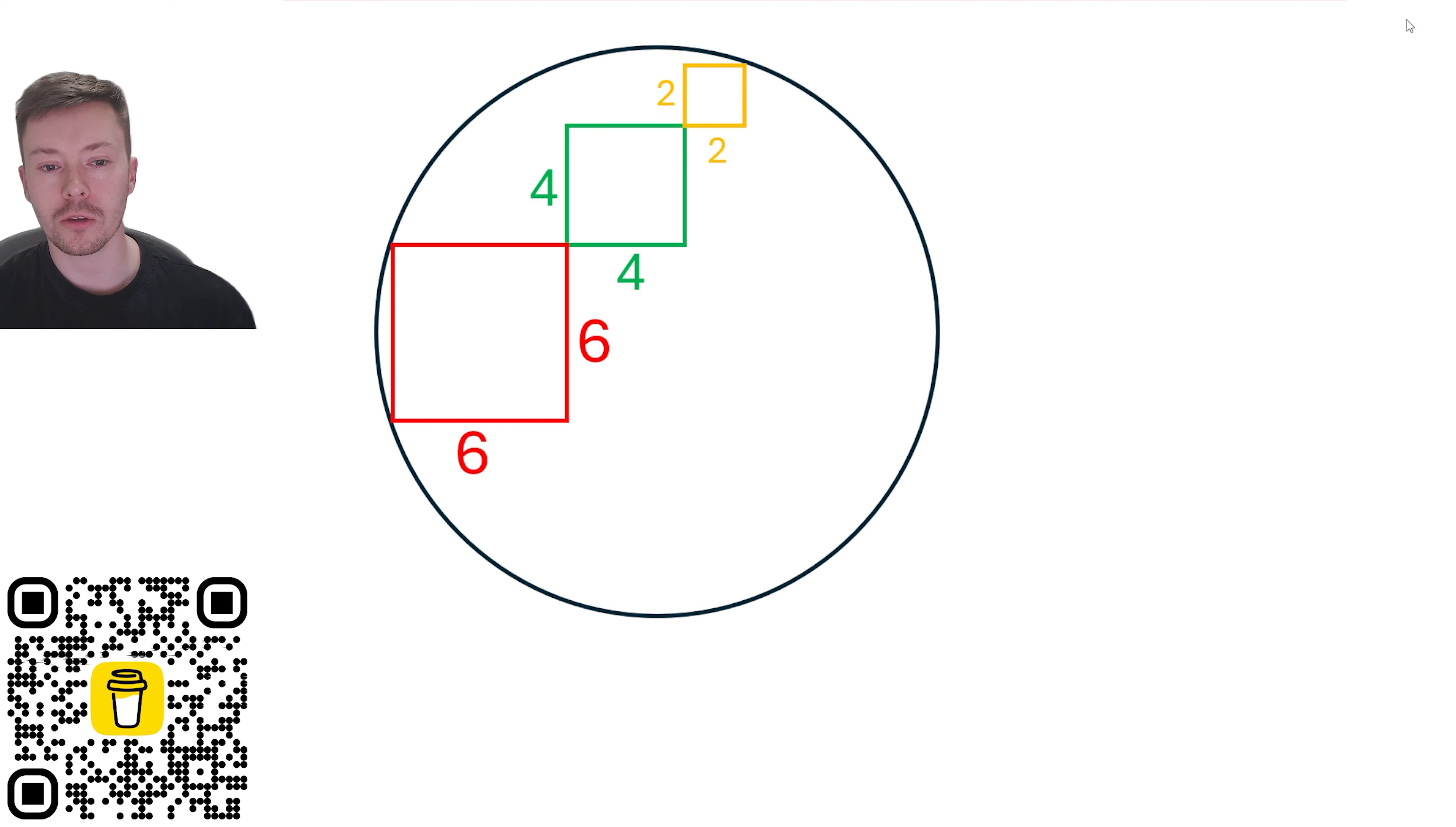So the first thing that you might notice, or that I noticed, is that we have got another six-unit square that we can draw around this four and two-unit square.